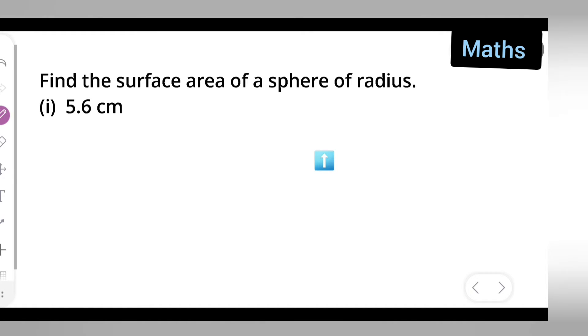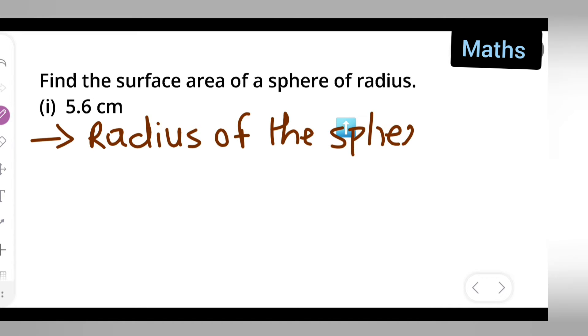First thing you can take down the question. So let us write down radius of the sphere is given to be what? Radius of the sphere. So what is the radius of the sphere is equal to 5.6 cm.